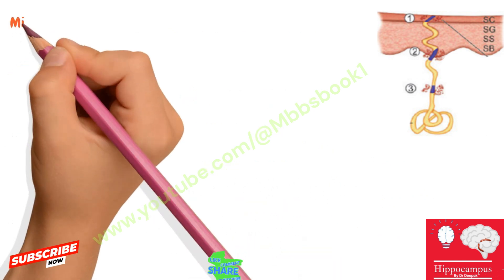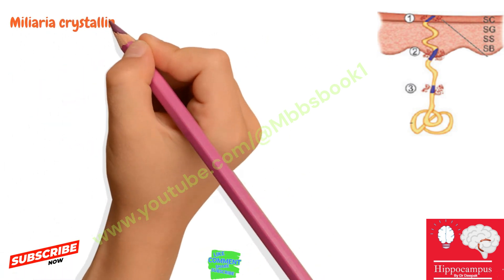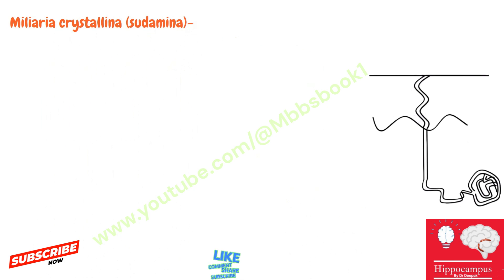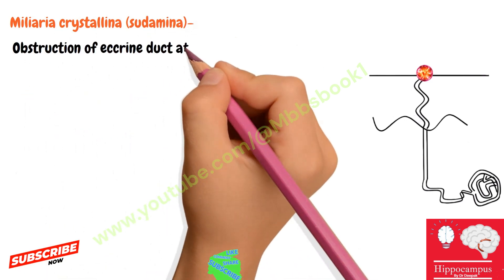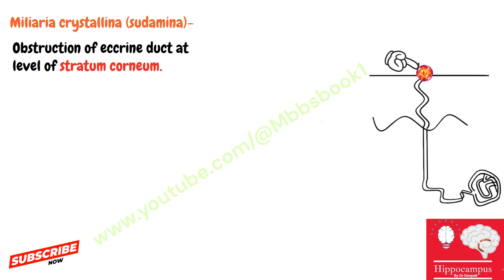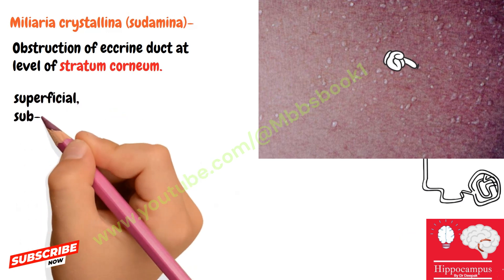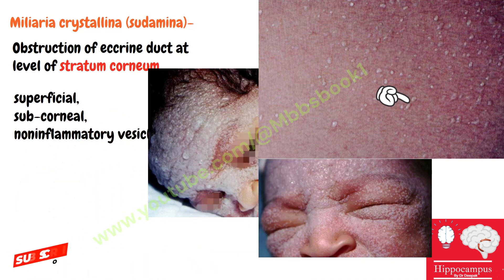First is miliaria crystallina, which is also known as sudamina. If there is obstruction at the level of the stratum corneum, this is called miliaria crystallina. It consists of superficial sub-corneal non-inflammatory vesicles that easily rupture when rubbed with fingers.